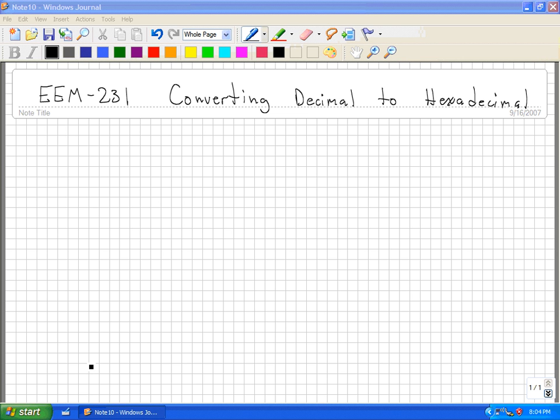Now we want to convert from decimal to hexadecimal. So let's take the decimal number of, say, 17, and I want to convert it to a hexadecimal number.